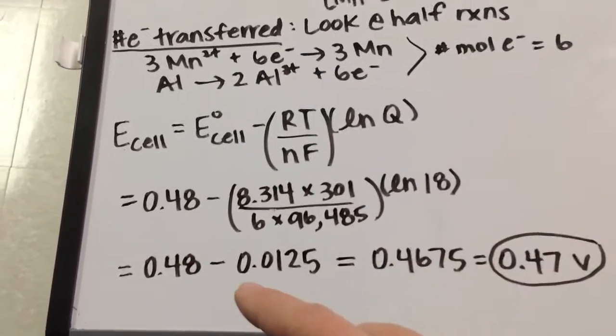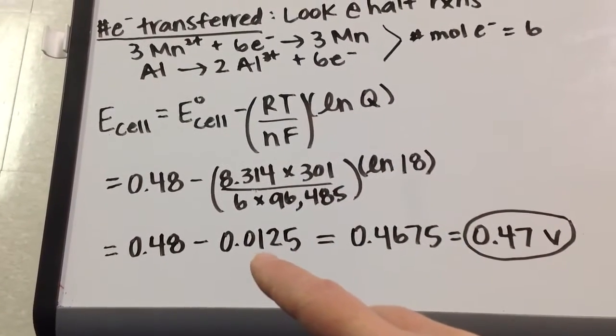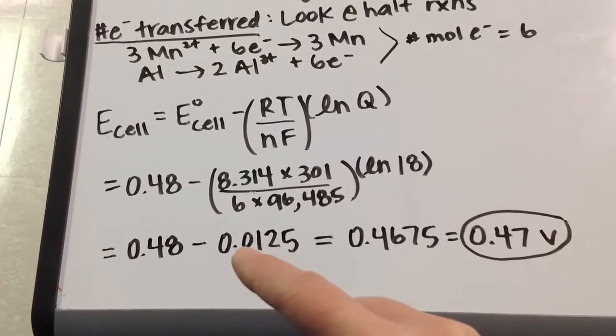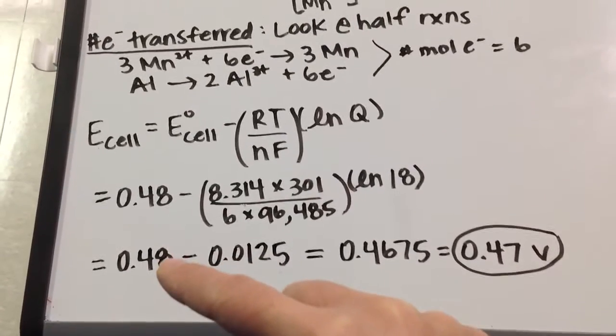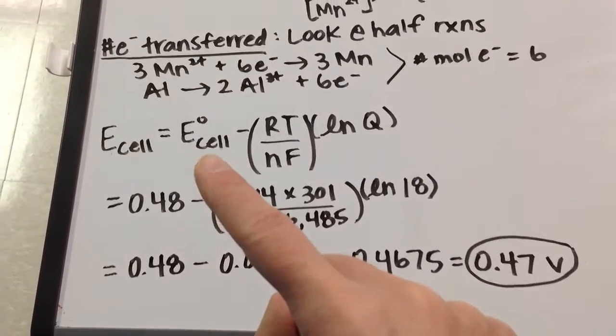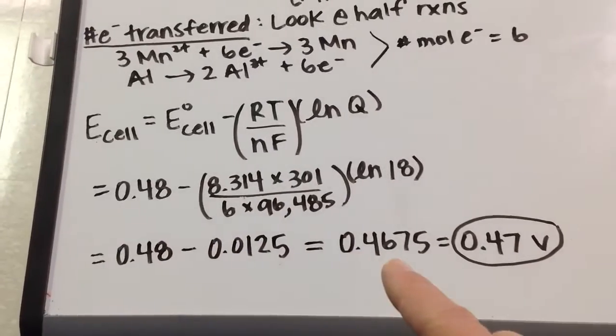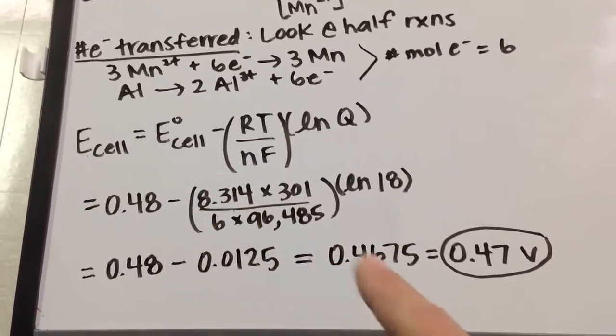When I do all this calculation, that comes out to be 0.0125—I'll carry extra decimal places and round at the end. When I subtract that from my cell potential under standard conditions, notice my new cell potential isn't all that different.